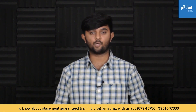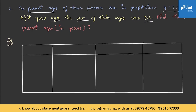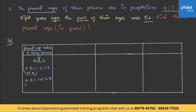Let us solve another question in ratio problems. The present ages of 3 persons are in proportions 4 to 7 to 9. 8 years ago the sum of their ages was 56. Find their present ages. We divide the question into parts. Let the 3 persons be A, B and C. A to B to C equals 4 to 7 to 9. Assuming present age as x, A equals 4x, B equals 7x, C equals 9x.